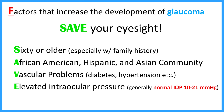F is for factors that increase the development of glaucoma. To remember the risk factors, use the word SAVE — save your eyesight. S is for 60 or older, especially with a family history. A is for African American, Hispanic, or Asian community — these populations are at higher risk. V is for vascular problems such as diabetes or hypertension. E is for elevated intraocular pressure. Remember, normal IOP is 10 to 21 millimeters of mercury. If patients have these risk factors, it's very important they get eye exams to detect if IOP is elevated.